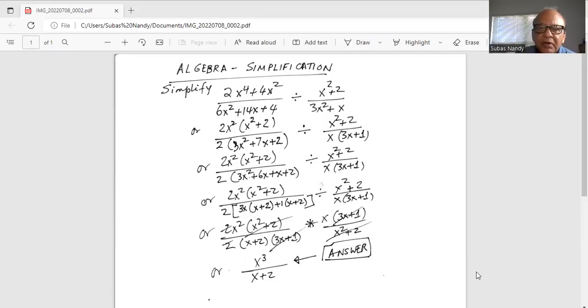And then divided by we will take 2 as the common factor outside which will be 3x square plus 7x plus 2 divided by x square plus 2. In the denominator, we will take x as the common factor out is 3x plus 1.